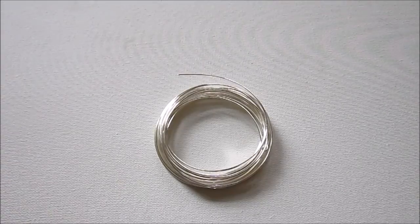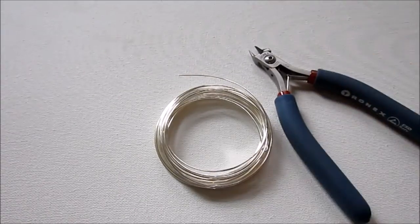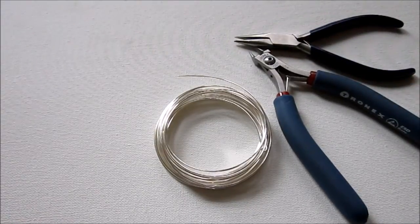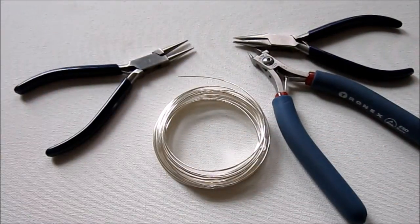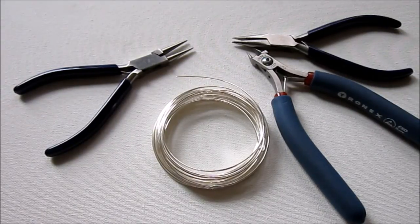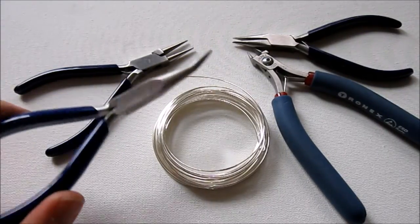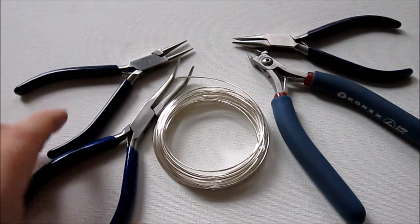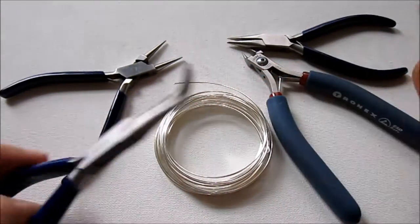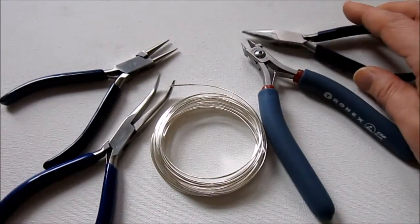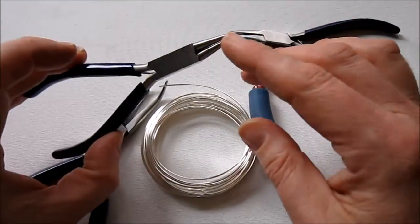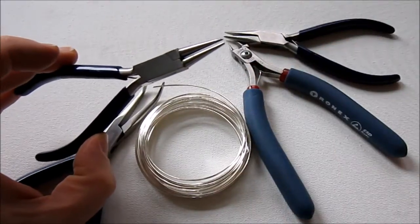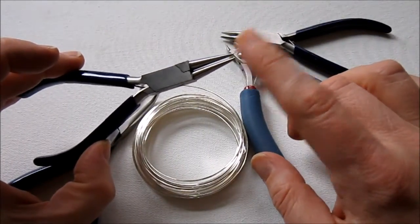You will also need wire cutters. You will need chain nose pliers, round nose pliers, and you're probably going to want a second pair of pliers just to kind of help you do some wrapping, which a favorite of mine is the bent nose pliers. You can use round nose pliers if you only hold the wire by the very tip when you're wrapping, and then you cut that part off because it will make a mark in your wire.